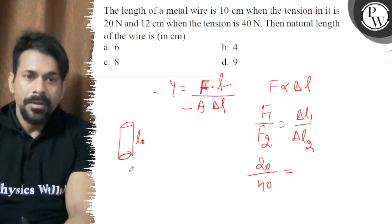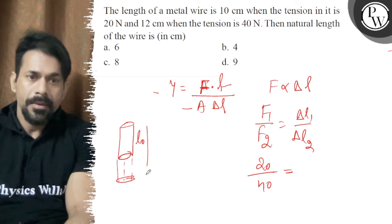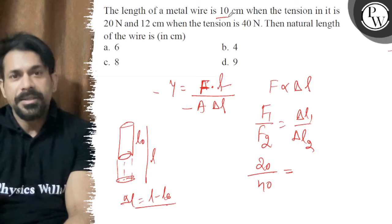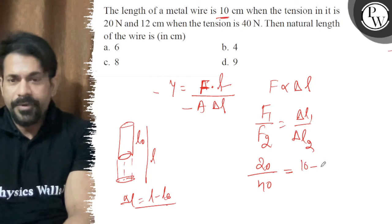So what can we write for del L? L minus L naught. L is 10, so 10 minus L naught.